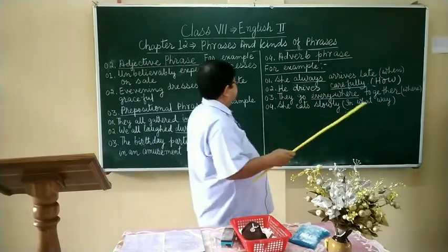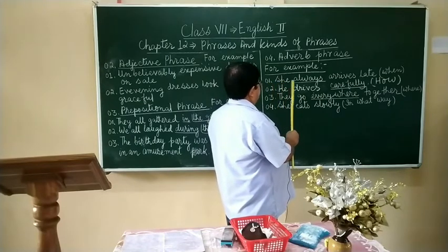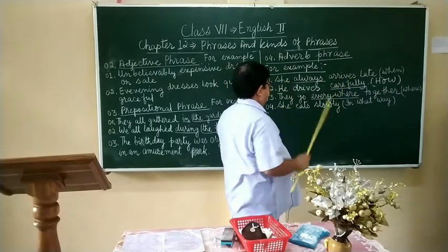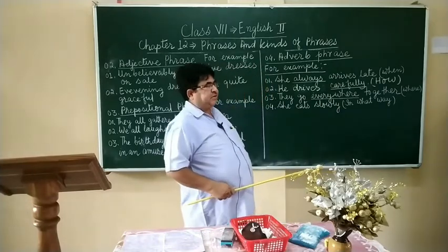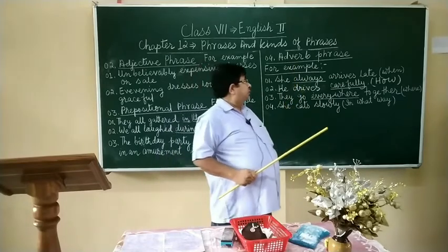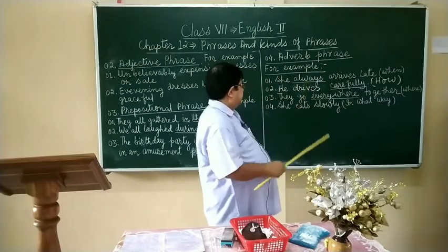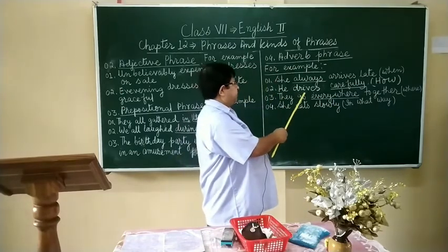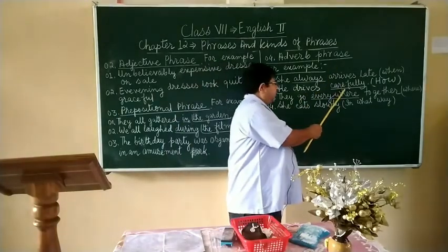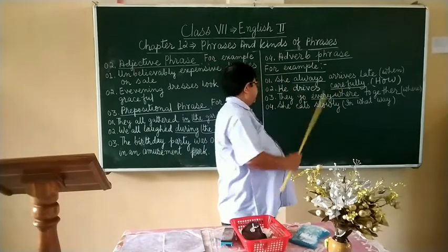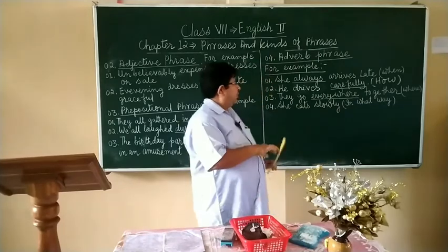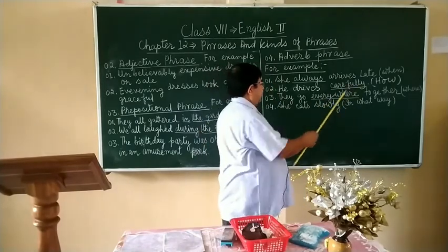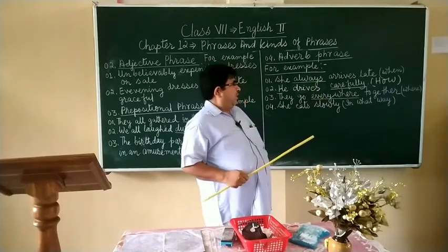For example, all of you see here. Example one: She always arrives late. Here the question is when she arrives late — the answer is always. So the adverb phrase is always. Example two: They go everywhere together. Here the question is where they go together — the answer is everywhere. Therefore, everywhere is the adverb phrase.